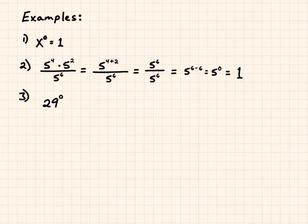29 to the zero equals 1. And negative one-half to the zero equals 1. Anything to the power of zero equals 1.